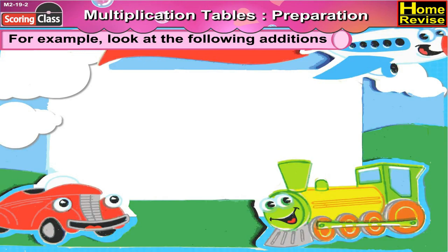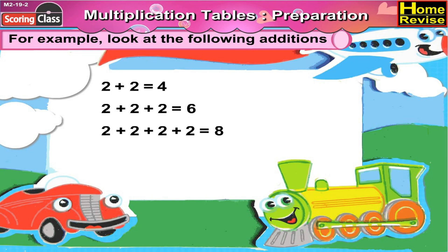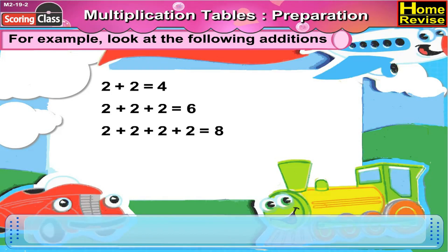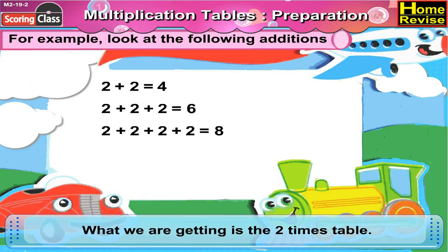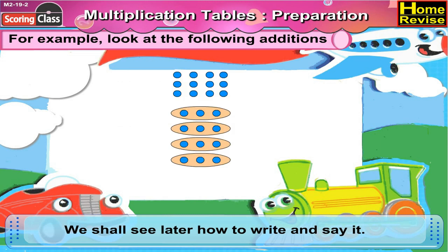Let us see an example. Look at the following additions. 2 plus 2 is 4. 2 plus 2 plus 2 is 6. 2 plus 2 plus 2 plus 2 is 8. What we are getting is the 2 times table. We shall see later how to write and say it.